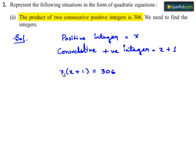We get x times x is x square and x times 1 is x, equal to 306. x square plus x, and on transposing 306 to left hand side, we get minus 306 and this equation is equal to 0.